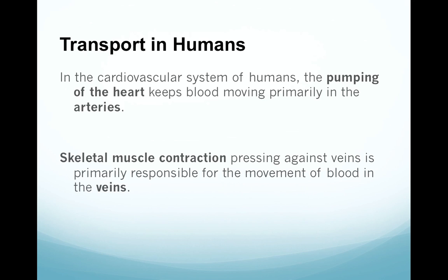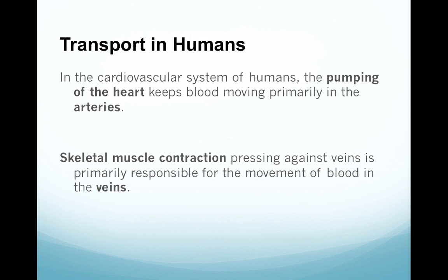In the cardiovascular system of humans, the pumping of the heart is what keeps blood moving in the arteries, and then skeletal muscle contraction pressing against the veins is what keeps blood moving in those veins. So if you have a muscle like a calf muscle that's relaxed, the veins are open, and then if it's contracted or tensed, it squeezes the veins closed because they have such thin walls, and that blood is pushed forward. Those valves keep it from flowing back.